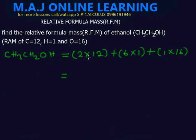So we calculate 2 times 12, which is 24, plus 6 times 1, which is 6, plus 1 times 16, which is 16. Then let me add 24 plus 6 plus 16, and we get 46.